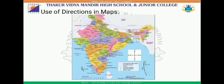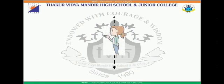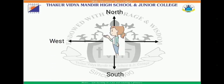My dear students, let us try this. As we know, the sun sets in the west direction. When the sun sets, stand facing the west direction. Now, understand in which direction will your shadow fall? These are the directions: North, South, West, and East. In which direction will your shadow fall? Yes, my dear students, your shadow will fall in the opposite direction — that is, the east direction.